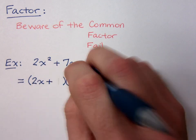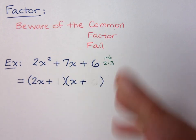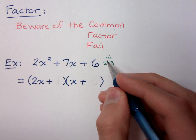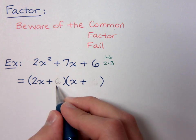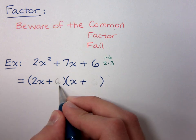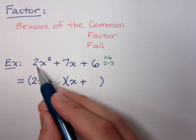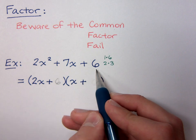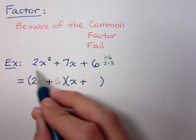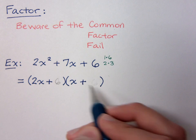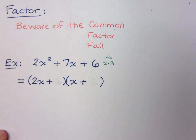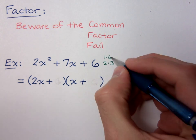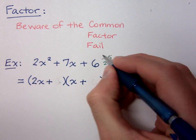Let's try another combination. If I switch around the 1 and the 6 and put the 6 next to the 2x, this will not work because 2 and 6 have a common factor of 2. If there's a common factor in a binomial factor, that means there was a common factor in the original problem — but I don't have that. There is no common factor up here, so I can't have one down here. So the 6 cannot go there, which means I can't use the combination of 1 and 6 at all.